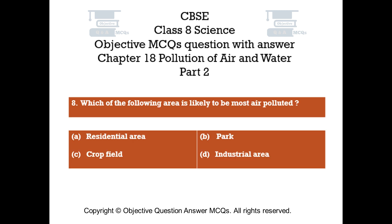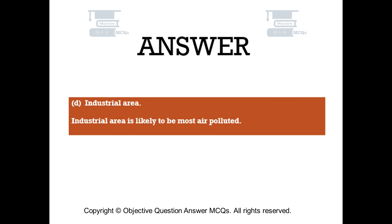Question number 8. Which of the following area is likely to be most air polluted? Option A: Residential area. Option B: Park. Option C: Crop field. Option D: Industrial area. The right answer is Option D — Industrial area. Industrial area is likely to be most air polluted.